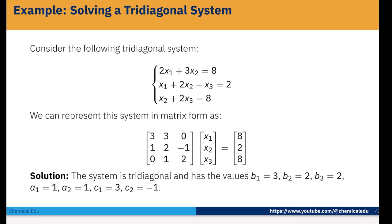Here is the example: 2x1 plus 3x2 equals 8; x1 plus 2x2 minus x3 equals 2; x2 plus 2x3 equals 8. Writing in matrix form: the coefficient matrix is [[2, 3, 0], [1, 2, -1], [0, 1, 2]], unknowns [x1, x2, x3], and constants [8, 2, 8]. This tri-diagonal system has b1=2, b2=2, b3=2, a1=1, a2=1, c1=3, and c2=-1.